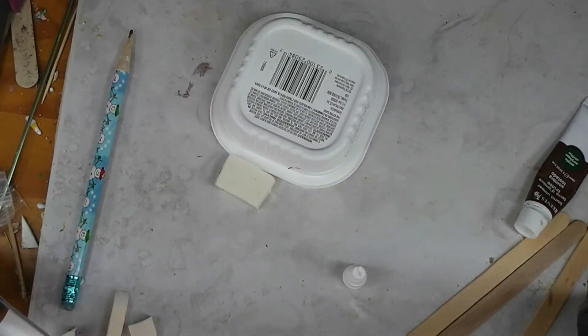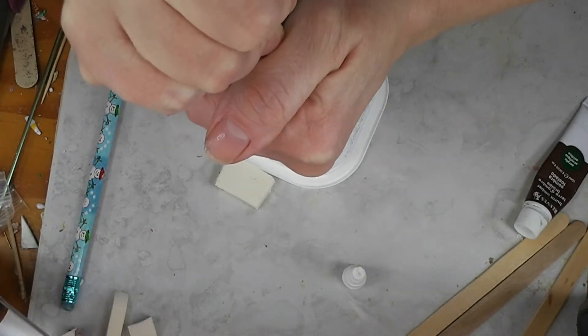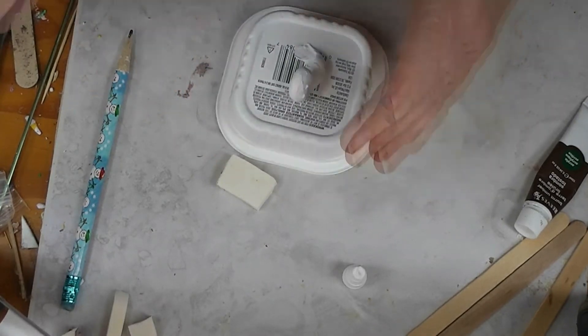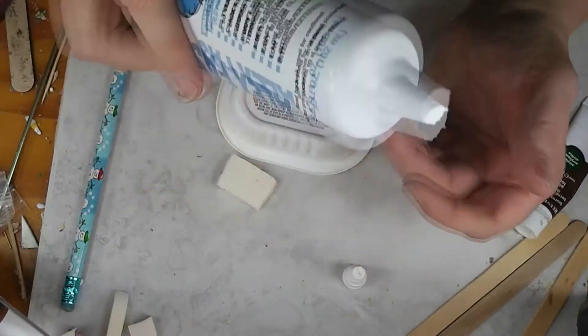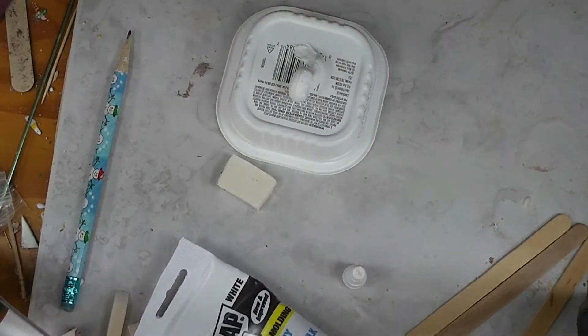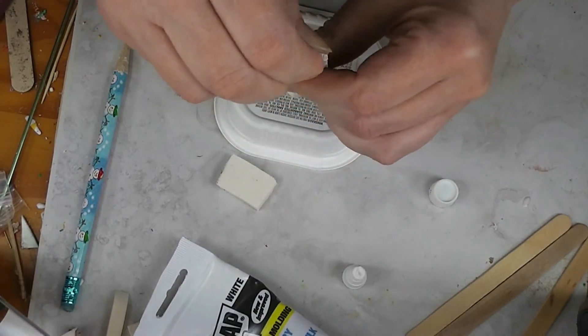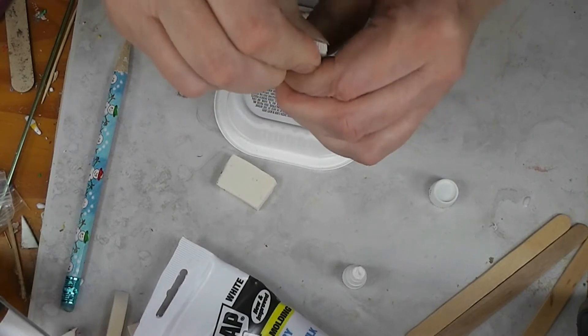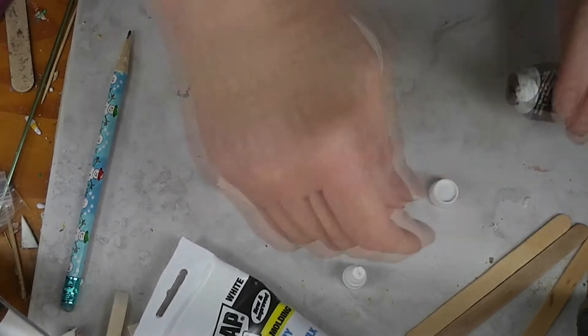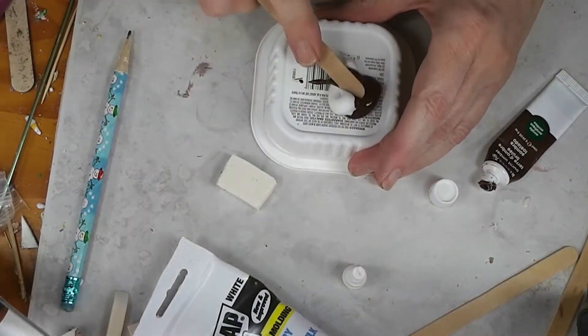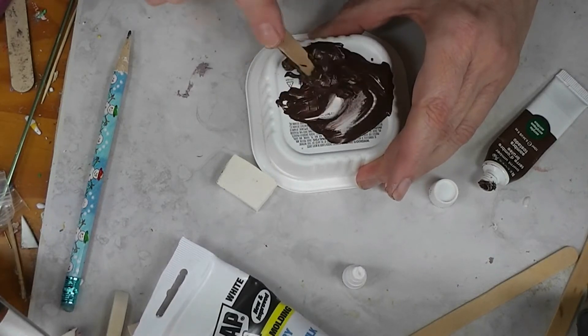All right, so let's squeeze out some caulk. Mine's gotten really thick because the lid came off in the drawer. This is just the same white DAP Fast Dry acrylic latex caulk plus silicone that I use for frosting a lot on this channel. Then I've got some burnt umber acrylic paint. Hopefully I've got enough. This is going to take quite a bit because I want to make chocolate frosting.